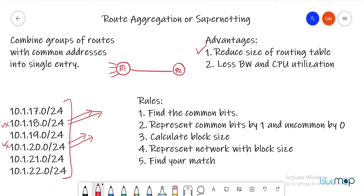Let's say we have R1 and R2, and all these networks are advertised between them. Behind the networks are actual host machines trying to exchange information — file transfers, web conferences. That is the actual data we need to transmit over the network. We need to focus less on routing updates if they're eating up a lot of bandwidth.